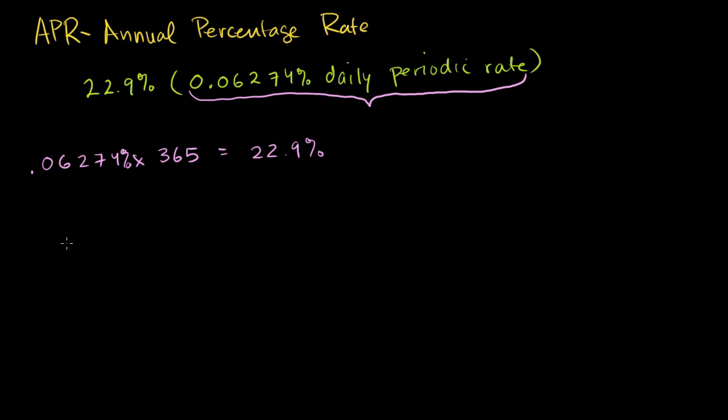They're compounding this much every day. If I write 0.06274% as a decimal, it's 0.0006274. Remember, 1% is 0.01, so 0.06% is 0.0006 as a decimal.